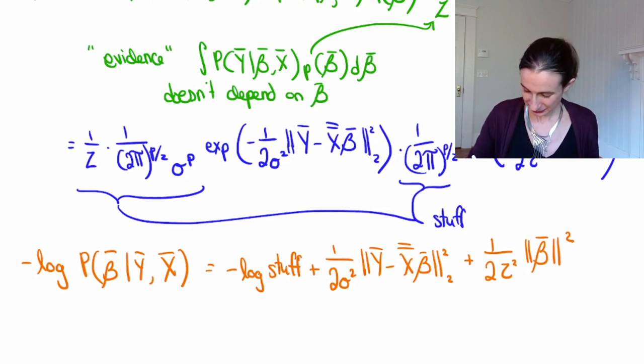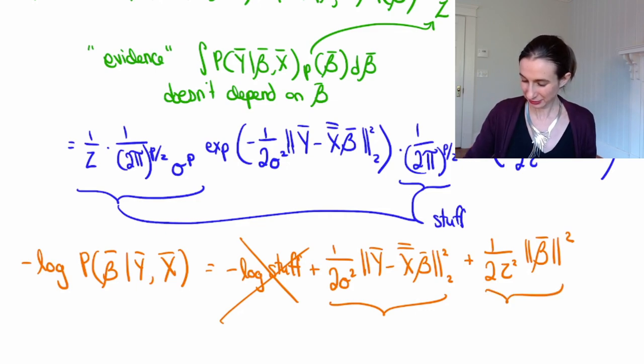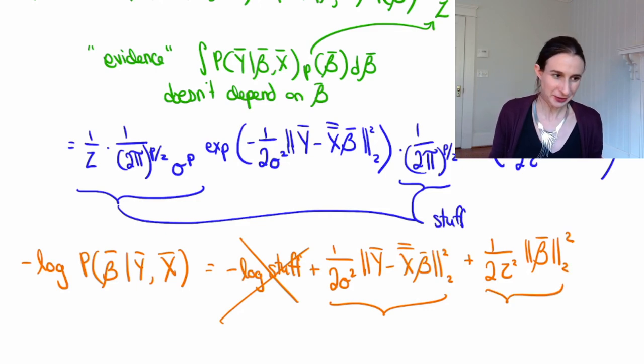Okay, cool. I hope this looks familiar. This is just ridge regression. The stuff doesn't matter. I don't need any of that. Whoops. I shouldn't erase it. I should just cross it out. So, this is my squared loss term. That's my L2 regularization term. So I'm back to where we were before.